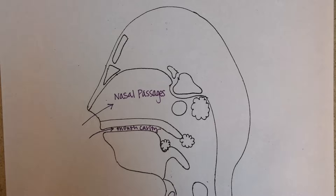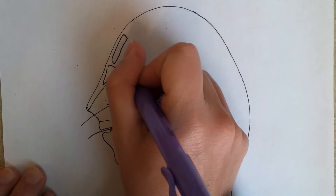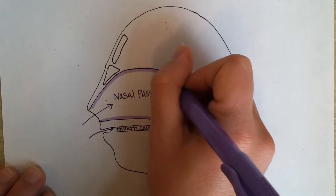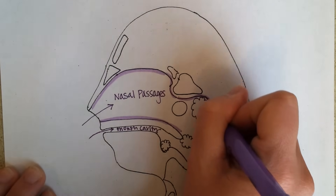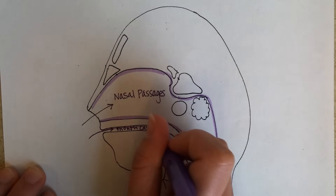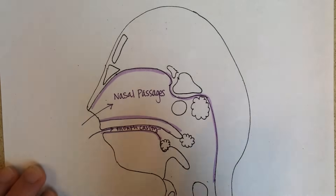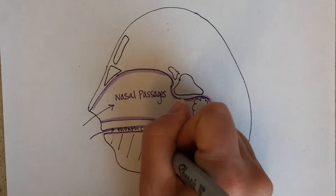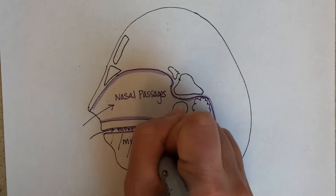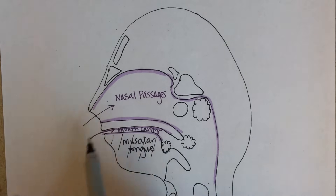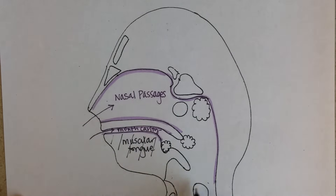This is where the air is going. This is the mouth. This region right here is actually the muscular tongue. So air would come in the nose, food comes in the mouth. And then this back area right here is called the pharynx, where both air and food can be mixing.